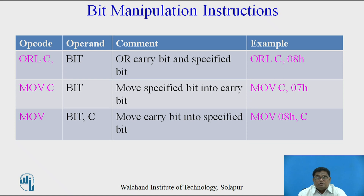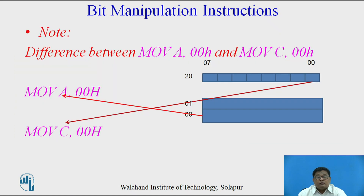MOV C, bit transfers the bit — the source comes from the bit addressable space and that bit gets stored in C. MOV bit, C means the source is C and the destination is one bit address from the bit addressable space. Note the difference between byte address and bit address: if we say MOV A, 00h — since A is 8-bit — 00 is considered a byte address. But MOV C, 00h — since C is a carry bit of one bit — 00 is considered a bit address.